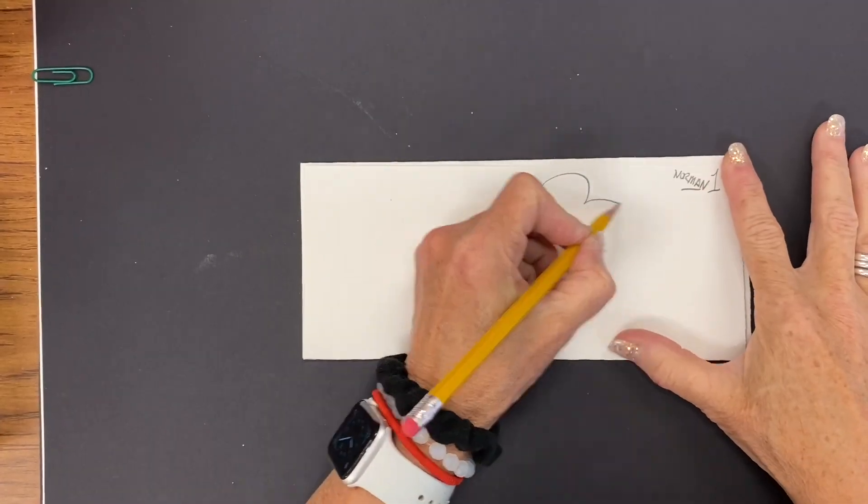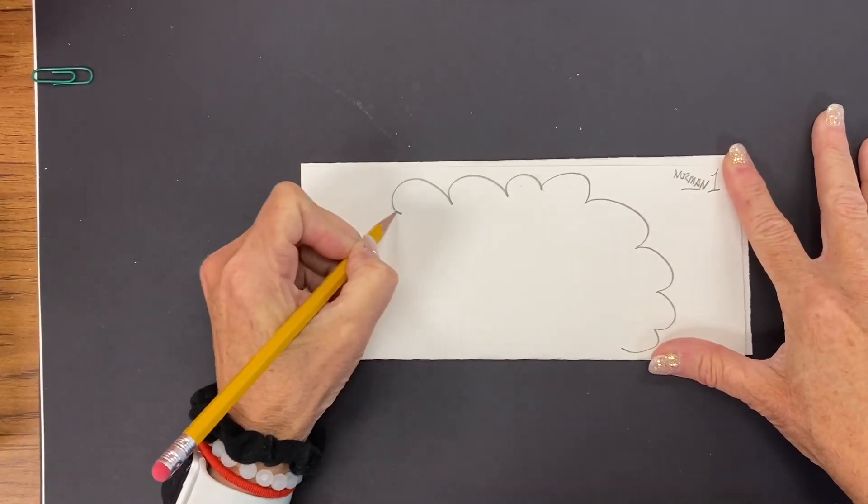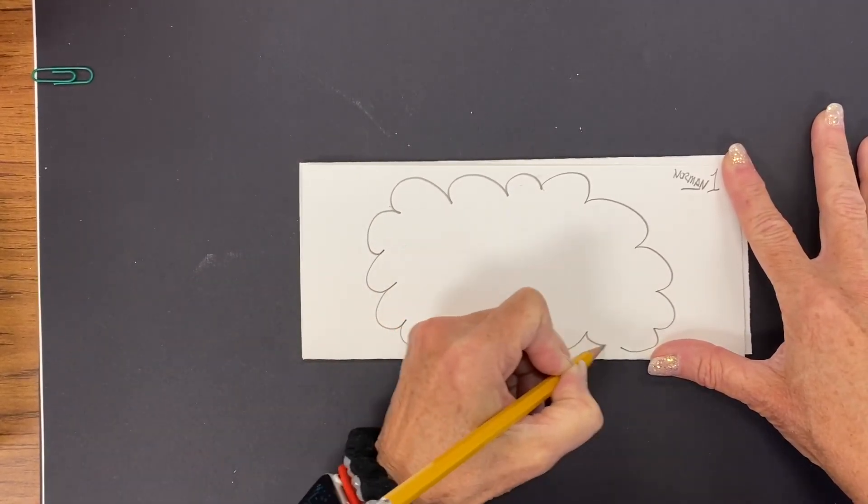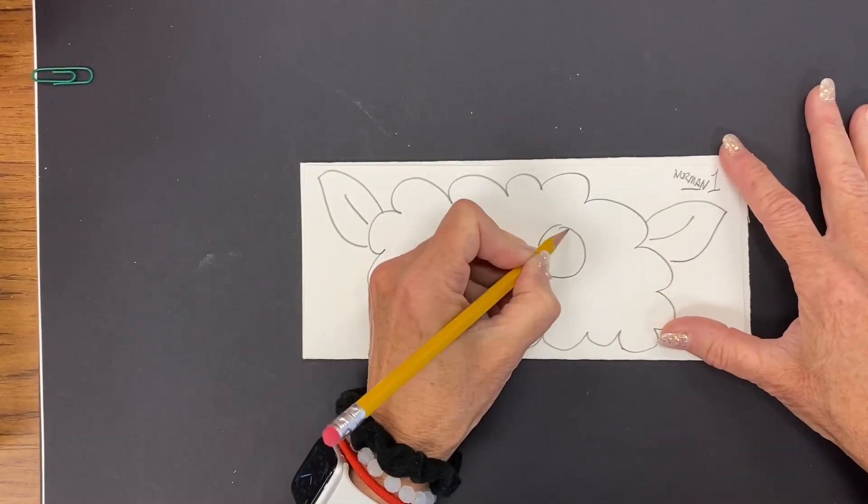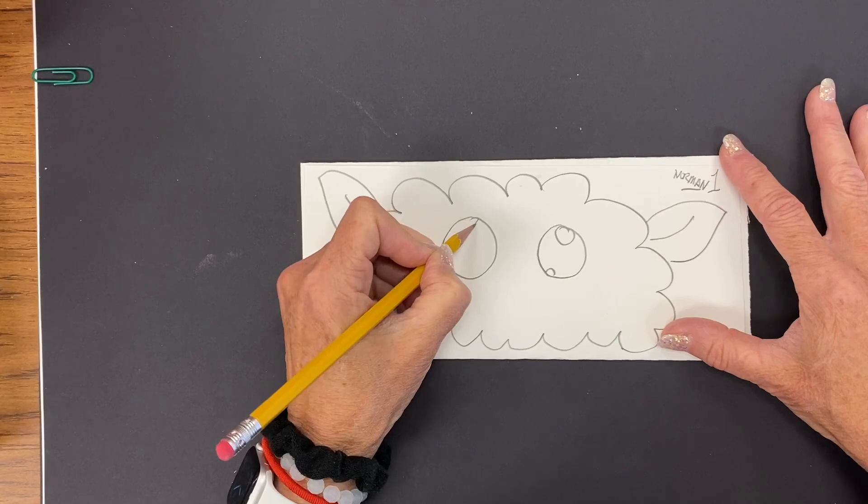Okay, since you wrote your name by the number one, you'll be drawing the head of your kindness creature. It does not have to be a human type head. It could be any kind of head. You could do eyeballs.